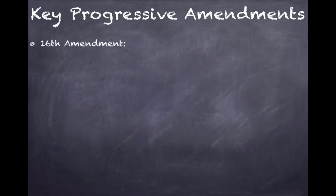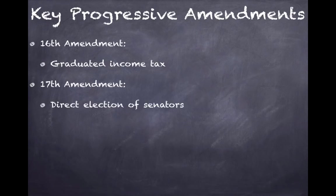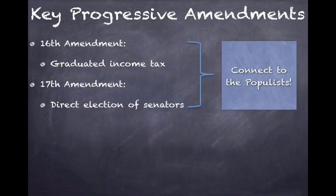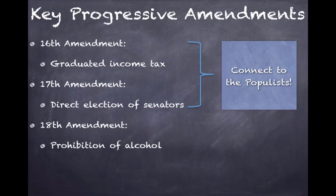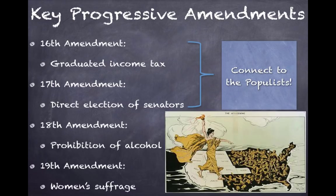Some progressive amendments you should know: the 16th Amendment is a graduated income tax; the 17th Amendment is the direct election of senators — connect this to the Populist Era, as these were goals of the Populist Party; the 18th Amendment is the prohibition of alcohol; and the 19th Amendment is women's suffrage. As seen in the political cartoon 'The Awakening,' many Western states granted suffrage to women first, and then it moved eastward to the whole country with the 19th Amendment.